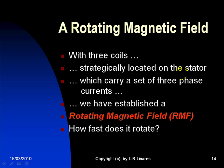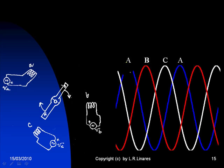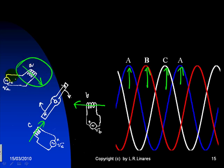How fast does that field rotate? Let's see. At this point in time, the field is in coil A. At this other point in time, the field is in coil B. At this third point in time, the field is in coil C. And at this point in time, the field is back in coil A. So, this is the time that it takes the rotating magnetic field to go through an entire revolution in the machine. How much time is that?